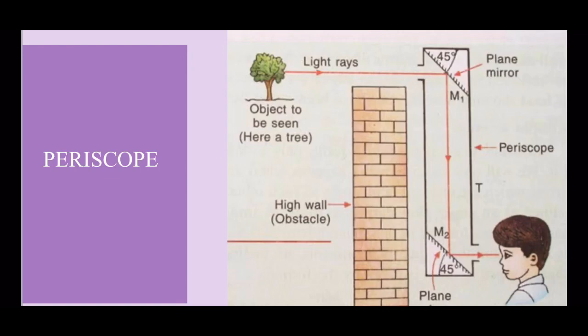Let us move to the last topic of the chapter, the periscope. The periscope is a device which gives us a higher view than normal. It is used in submarines to spot other ships without being noticed. A person can see around corners and behind a barrier with the help of a periscope. It is based on the law of reflection of light.